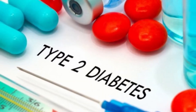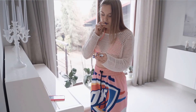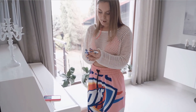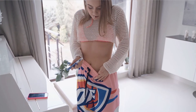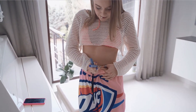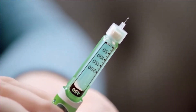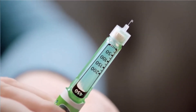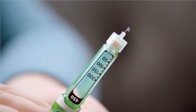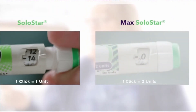Dosage in type 2 diabetes: the dosage of 2-geo in type 2 diabetes also varies. It depends on whether you are already using insulin or are using it for the first time. If you are using insulin for the first time, your healthcare provider may start you on a 2-geo dose of 0.2 units per kg once daily.